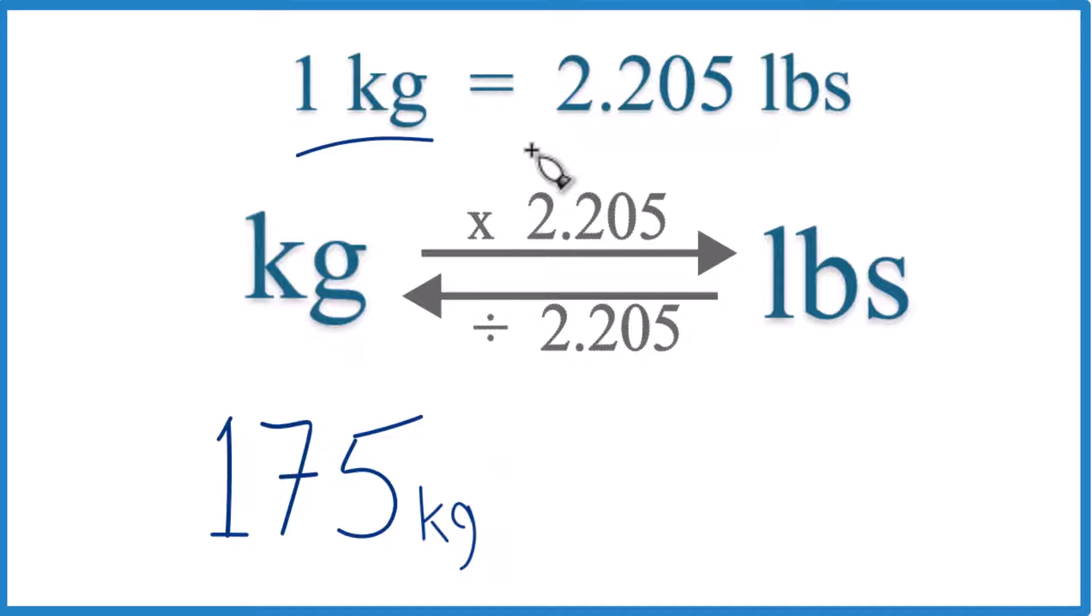One kilogram equals 2.205 pounds. We call that a conversion factor. We need it when we're going from kilograms to pounds or pounds to kilograms.